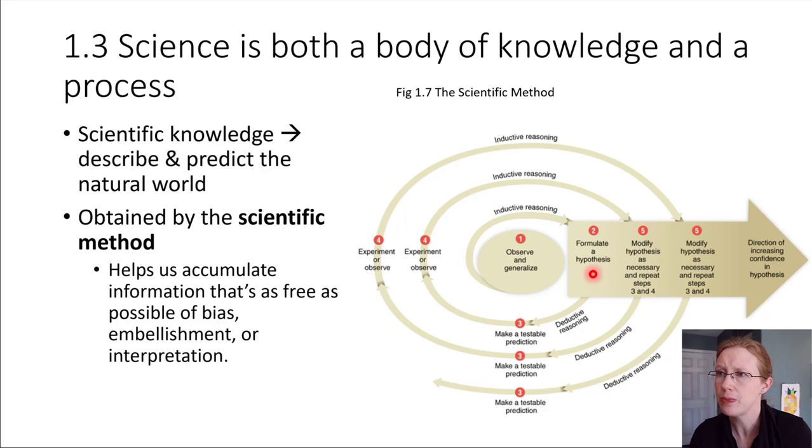Next up, once we have that hypothesis, would be to make a testable prediction. Let's make a prediction. If we run an experiment on humans, what would we predict to happen? Okay, so the prediction could be something like giving 10 milligrams per day of this drug to people with high blood pressure will lower their blood pressure within one month. So notice how specific this is.